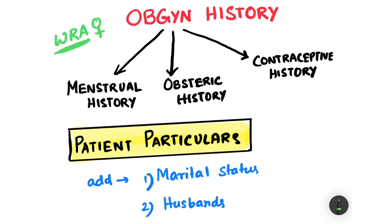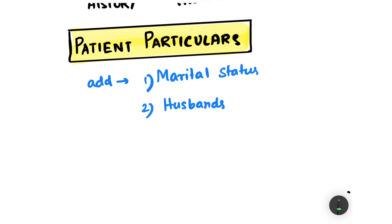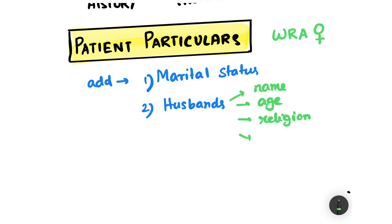Let's learn these things one by one. Before doing any of these, whenever we are taking a history of a female within the reproductive age group, we first note a few things in the patient particulars. In that section, we add the marital status of the patient, along with a few details about the husband — for example, name, age, religion, and occupation of the husband.